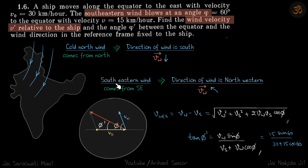If we say that we have a southeastern wind, that means the wind is coming from southeast. So the direction of wind actually will be northwestern, it should be like this.